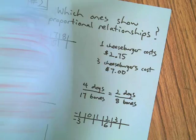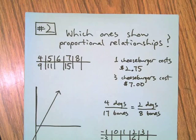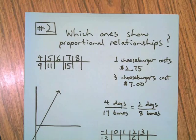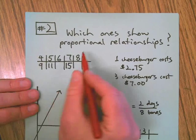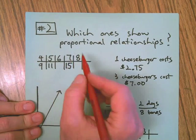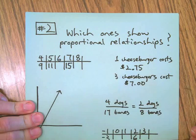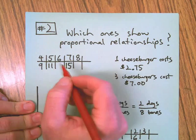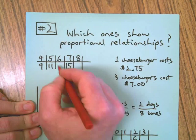Onto the next one. Which ones show proportional relationships? Same as the last set of problems. We're looking for the same multipliers here, so I could fill in the table.